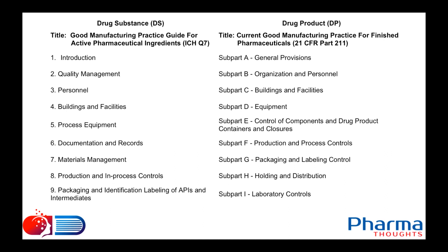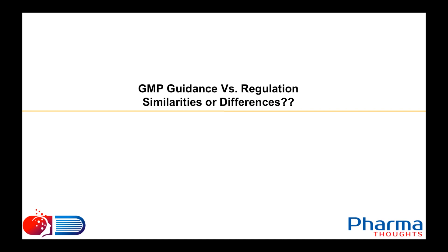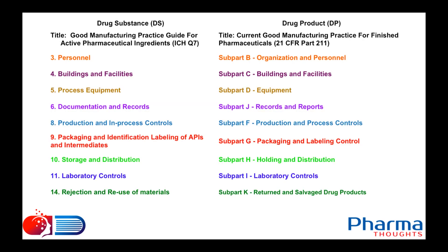The 21 CFR Part 211 has 11 sections. If you compare the two, you will see that the sections for API guidance and drug product regulation are very similar. The basic requirements are the same — buildings and facilities, process equipment, documentation and records, production and in-process controls are all comparable sections. The titles, subjects, and content are essentially the same, because GMP fundamentals apply equally to APIs and finished drug products.